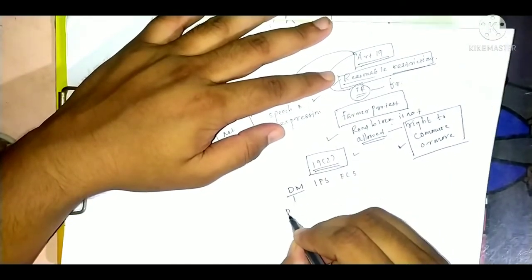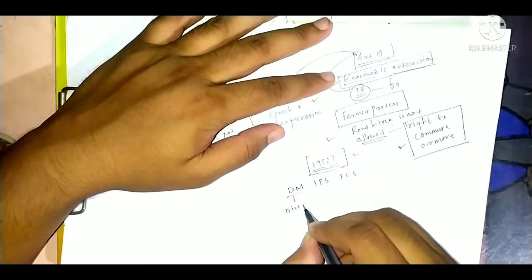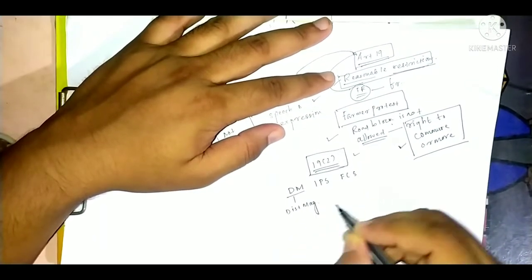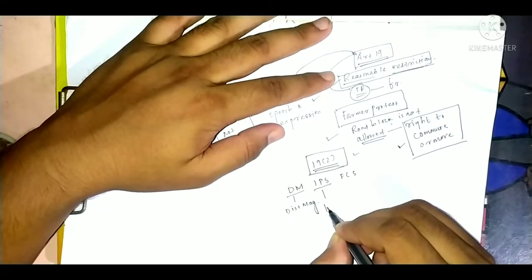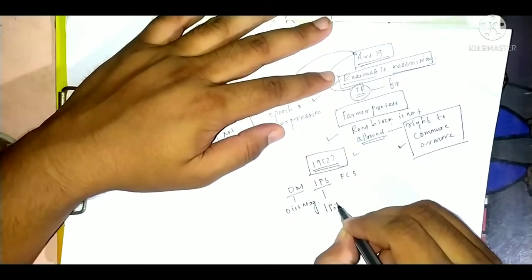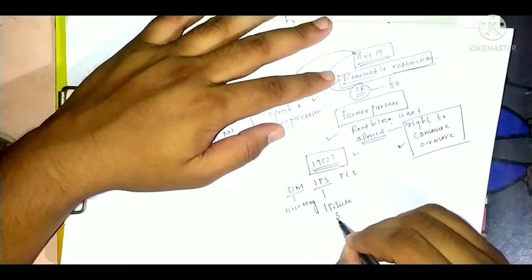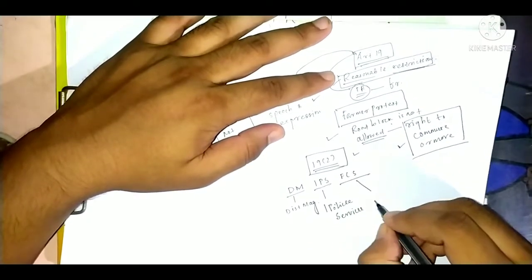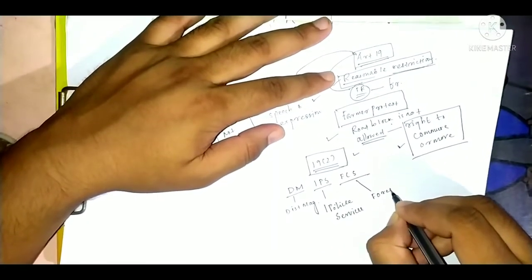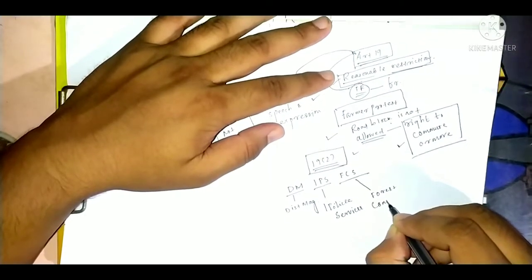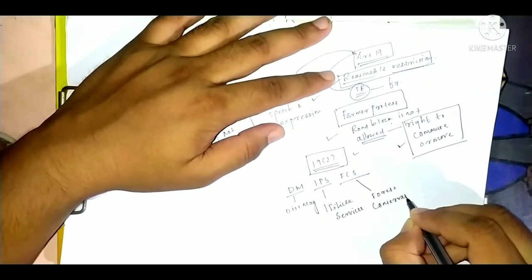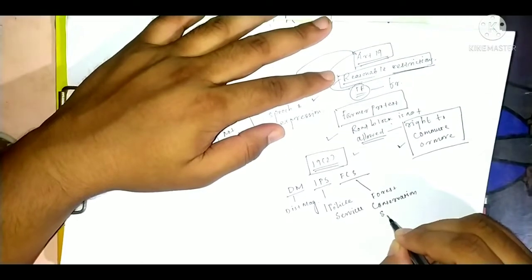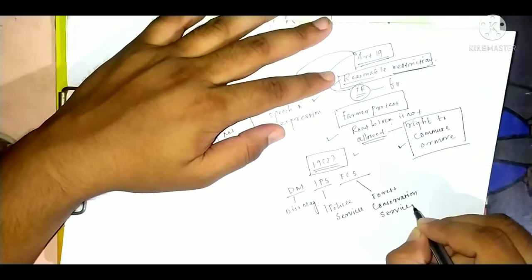You will remember DM as District Magistrate, IPS as Indian Police Service, and FCAS as Forest Conservation Service. This is only a trick to remember.